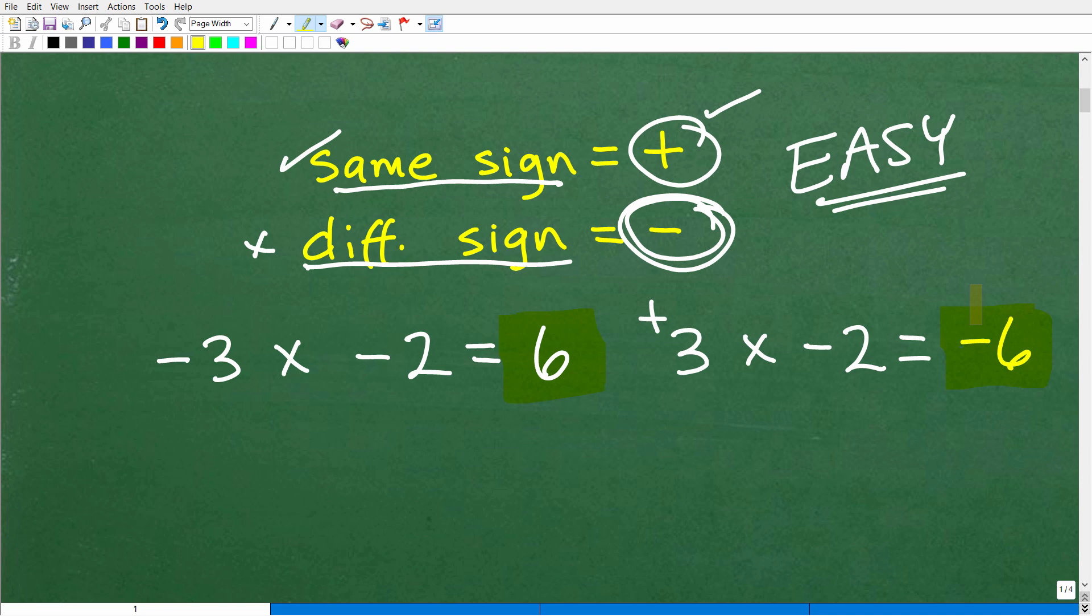Super easy. And again, this is the rule for multiplication and division of positive and negative numbers. So it's pretty exciting stuff because when you think about it, when you're working with positive and negative numbers, you have to know how to add, subtract, multiply, and divide. And if you understand this rule, you got these two operations down. That's 50% of mastering positive and negative numbers.